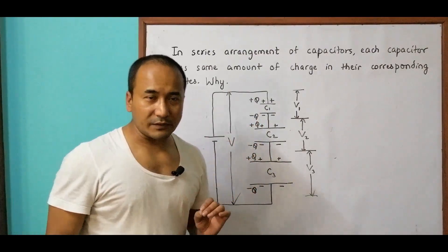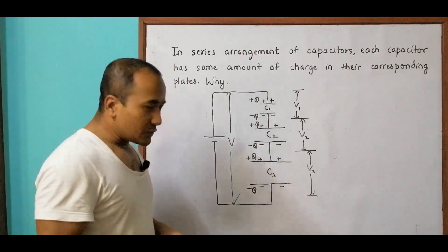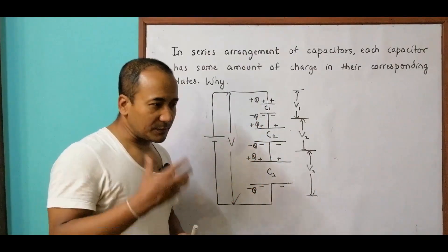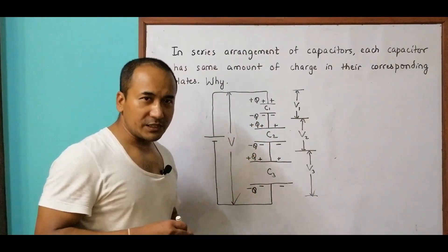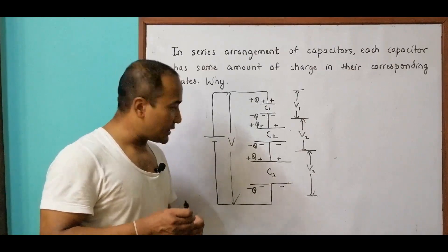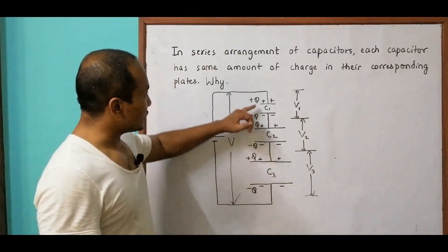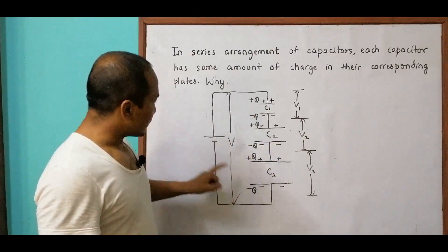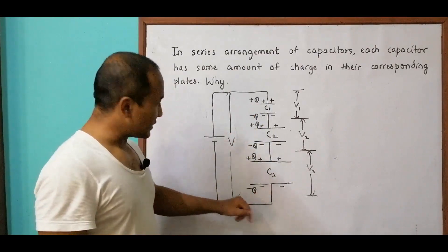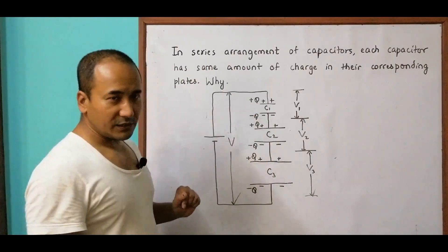Why does that happen? This is the main theme of the question. The deposition of charges here is mainly because of induction. From one end to a certain point it is conduction, and from there onward it is induction.